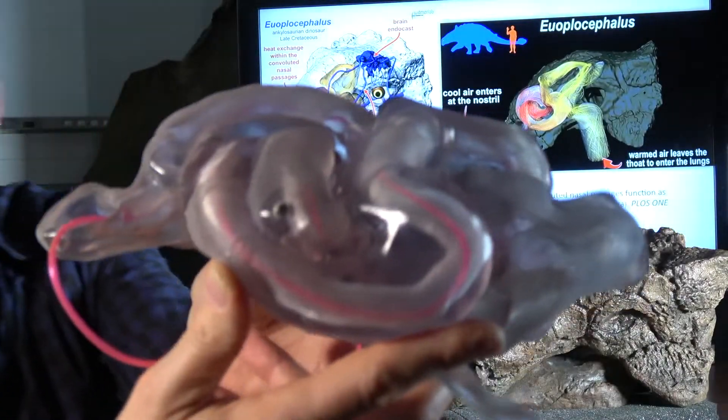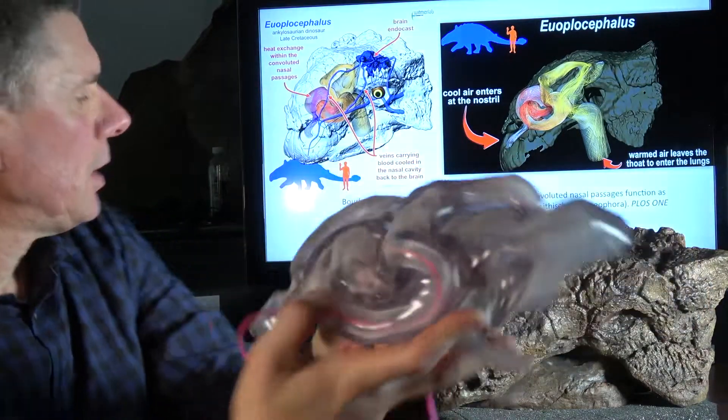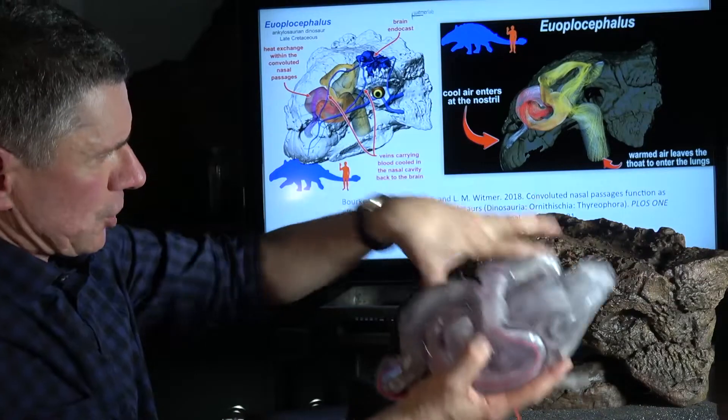And so this is the 3D printed nasal cavity of euloplocephalus. It would actually sit right in this area right in here, kind of stuck right in there.